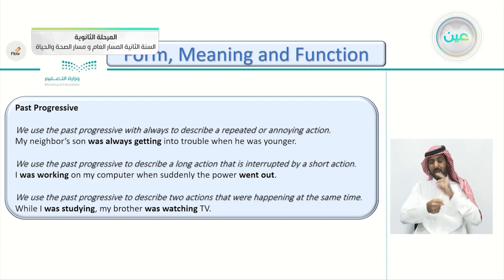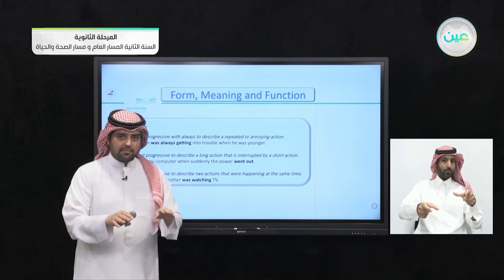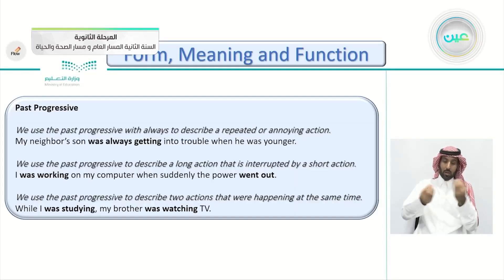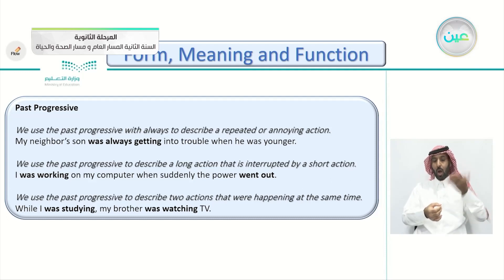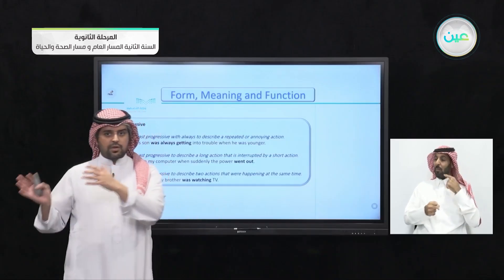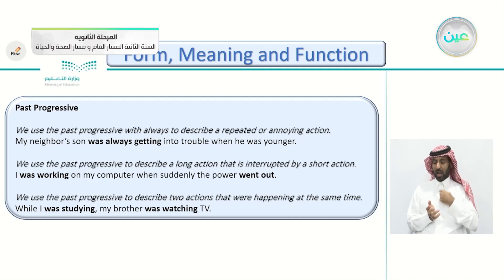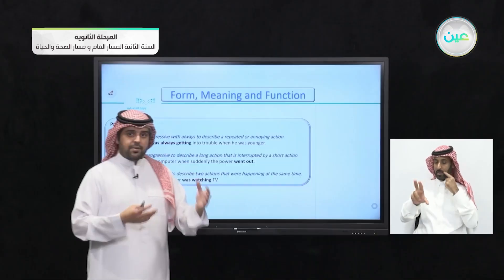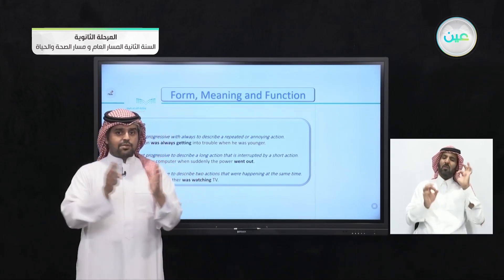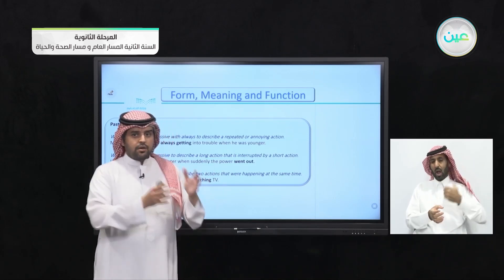We also use the past progressive to describe two actions happening at the same time — simultaneously. We always use the word 'while': 'While I was studying, my brother was watching TV.' Both actions are in the past progressive. More examples: 'While I was sleeping, my brother was studying.' The word 'while' signals that two past actions were happening at the same time.